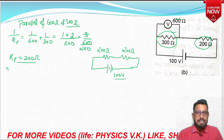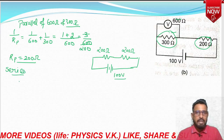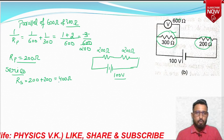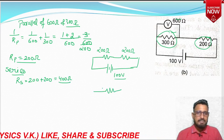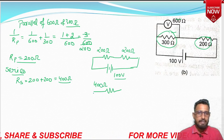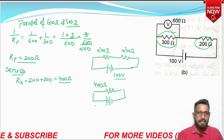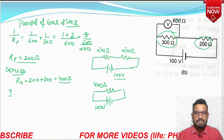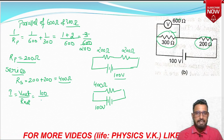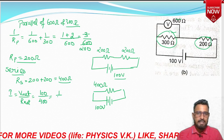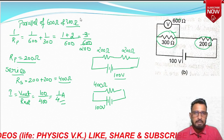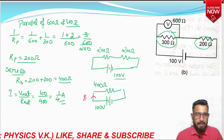Next step is series. Series of 200 and 200 gives total 400 ohm. So our net resistance is 400 ohm connected across a 100 volt battery. Net current equals net voltage divided by net resistance: 100 divided by 400 equals 1/4 ampere. So the current flowing through this circuit is 1/4 ampere.